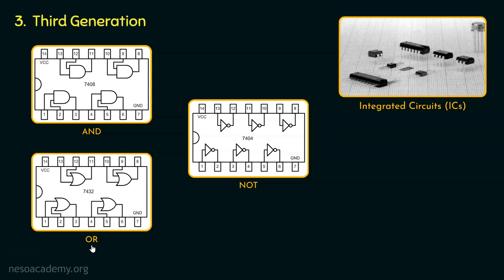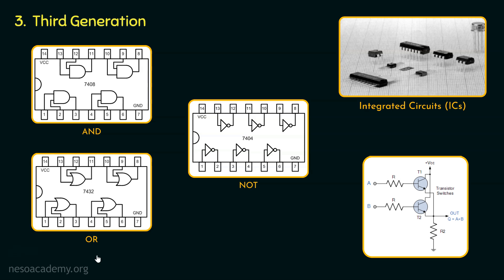Similarly, for OR gate, just like AND, here also we have got four two-input gates. And if you remember, OR gates are also implemented using two transistors at least. So in this particular IC, we have at least eight transistors.